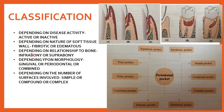The third classification is depending upon the relationship to bone — whether it is infra-bony or supra-bony. Infra-bony is also known as sub-crestal or intra-alveolar, and supra-bony is also known as supra-crestal or supra-alveolar. Supra-bony is above the crest of the bone, and infra-bony is below the crest of the bone where the pocket has deepened.